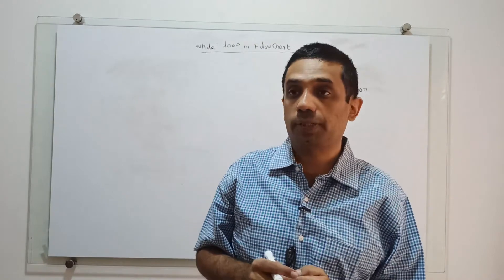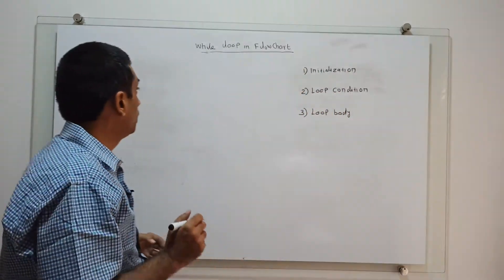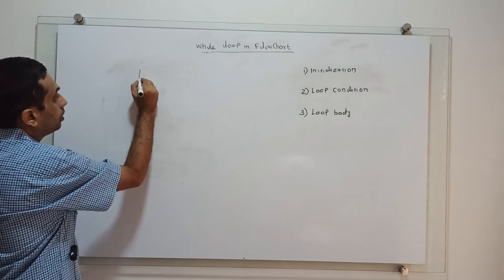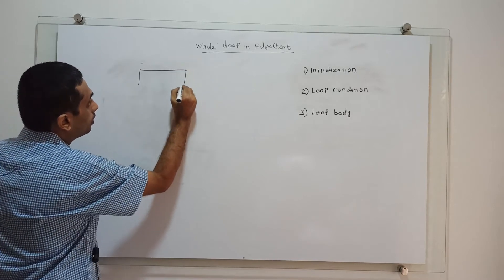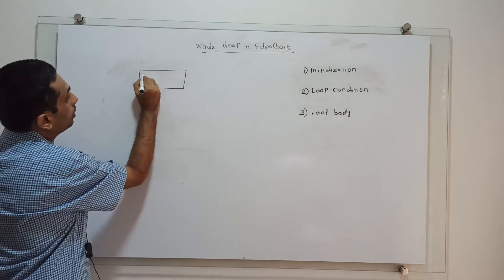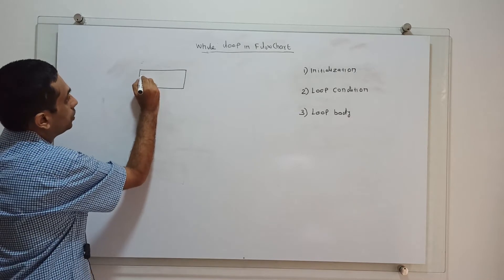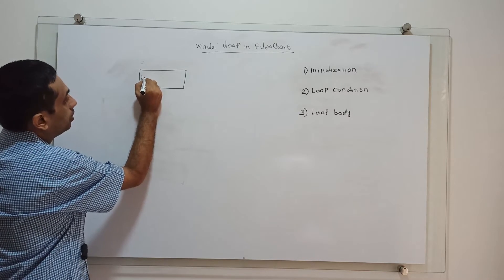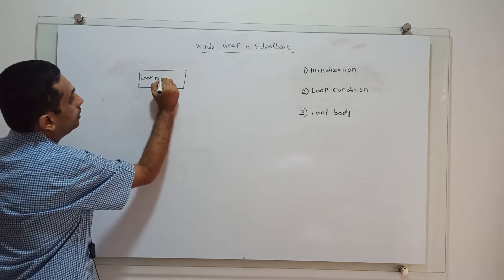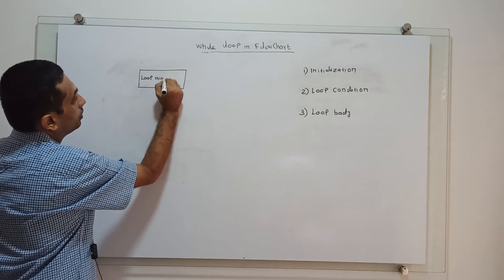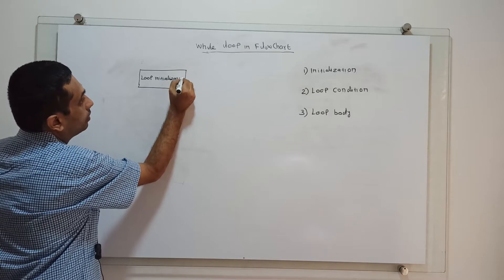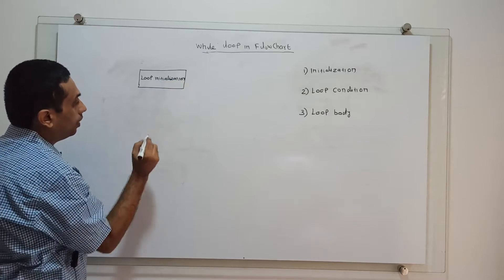In a while loop, in the beginning we have loop initialization. So we start by drawing the loop initialization step in the flowchart.